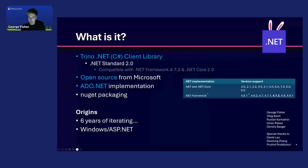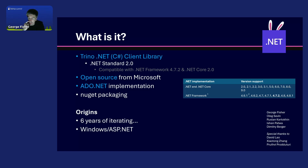So what is this? This is a Trino .NET C-Sharp client library that we are open sourcing from Microsoft. It is .NET Standard 2.0, which means it's compatible with all your favorite .NET Framework and .NET Core, which is going to be very flexible. It has full ADO.NET implementation and NuGet packaging. It originally started six years ago as a Presto client with David Lau, who wrote a little bit of code to query Presto, and that has just turned into a project that wouldn't die.